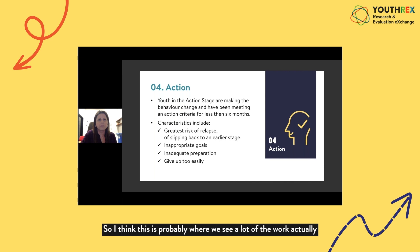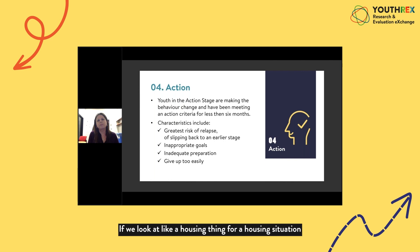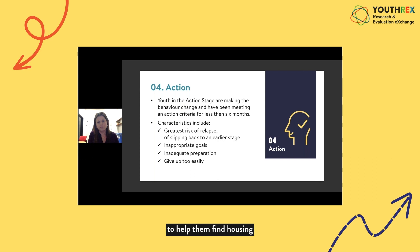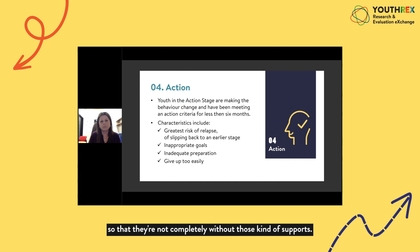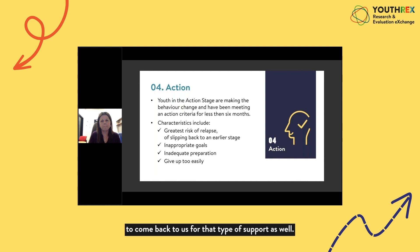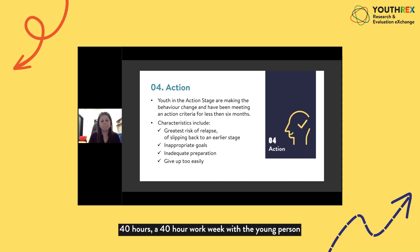Miles speaks to the intensity of the action phase using a housing example. When working with a young person on finding housing, the team also develops escape plans for if something falls through — ensuring they have something to fall back on if they're crashing on a couch and that falls through. The intensity varies greatly: at times a worker may spend a full 40-hour work week devoted to a young person, while other times it might be a bi-weekly or twice-a-week check-in, depending on the circumstance.